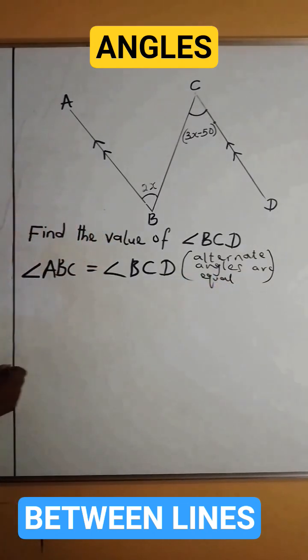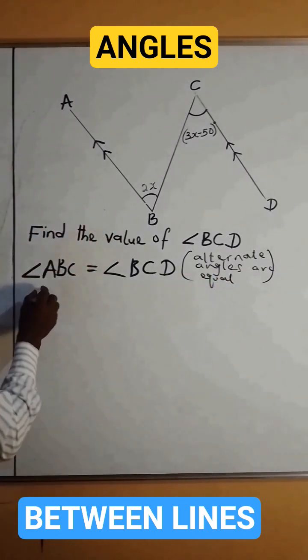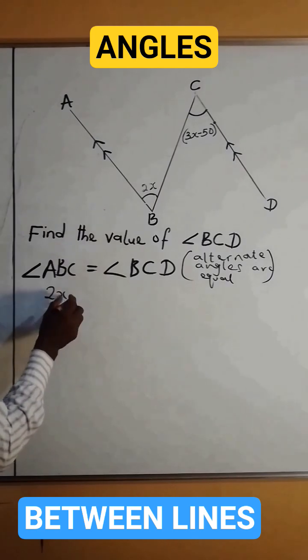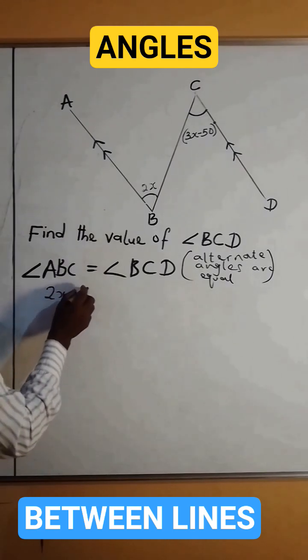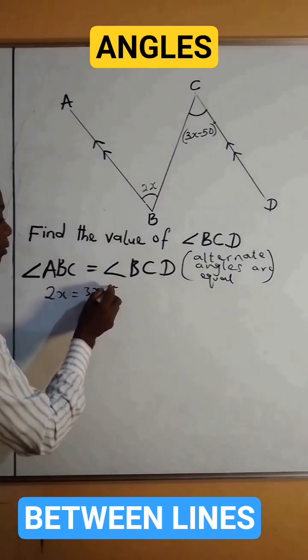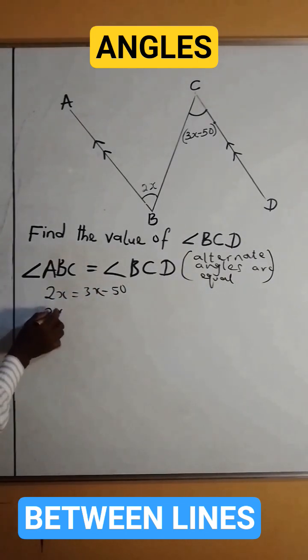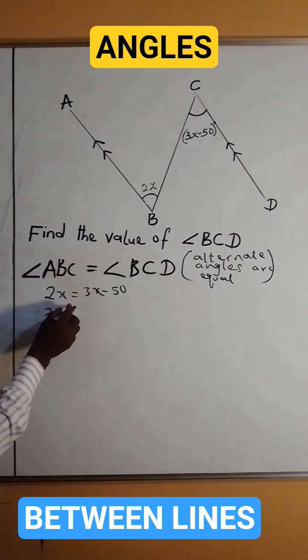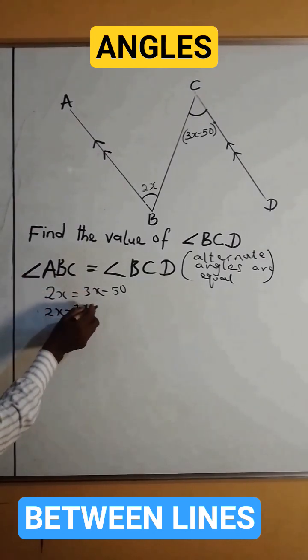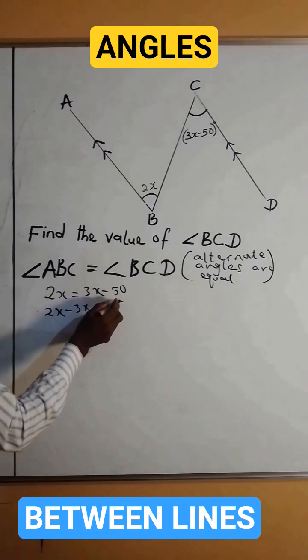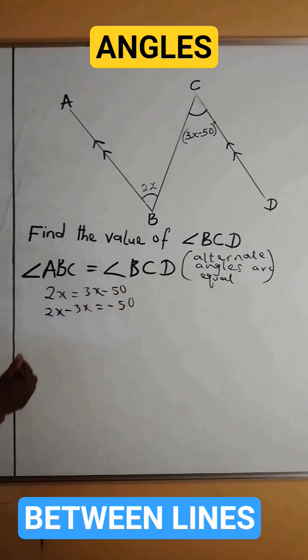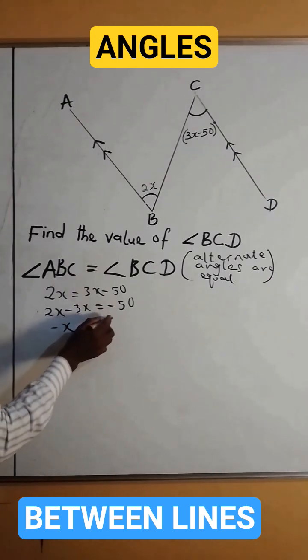So the implication is that 2x equals 3x minus 50. Both of them are equal. Transfer 3x to the left-hand side, so we have 2x minus 3x equals minus 50. 2x minus 3x is minus x, so minus x equals minus 50 degrees.